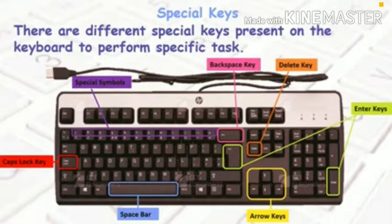The keys marked with purple color are special symbols. The pink color key is the backspace key. The orange color key is the delete key. There are two enter keys marked with green color. There are four arrow keys marked with yellow color on the keyboard. There is one spacebar key — it is the longest key on the keyboard — marked with blue color. There is also a caps lock key marked with red color on the keyboard.